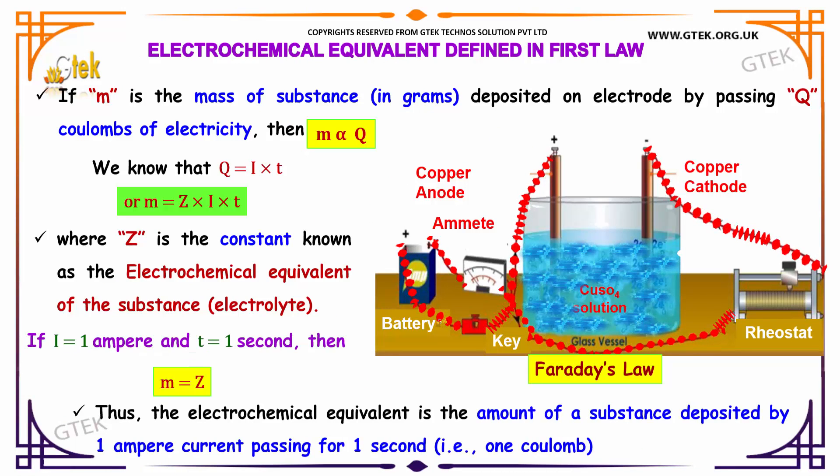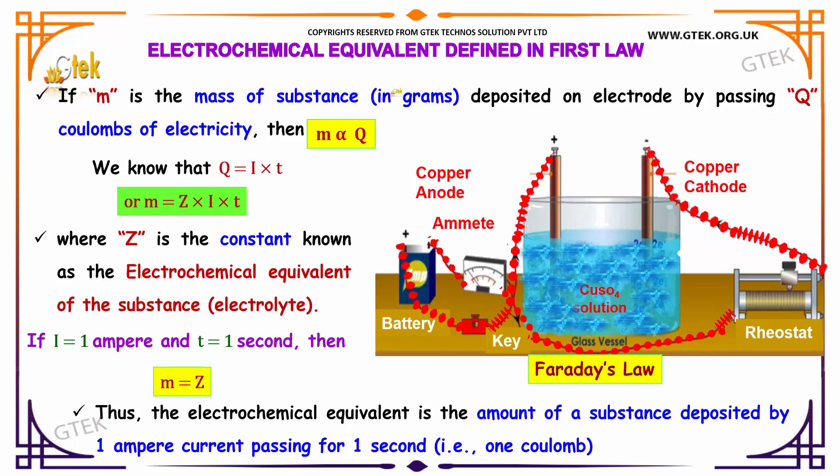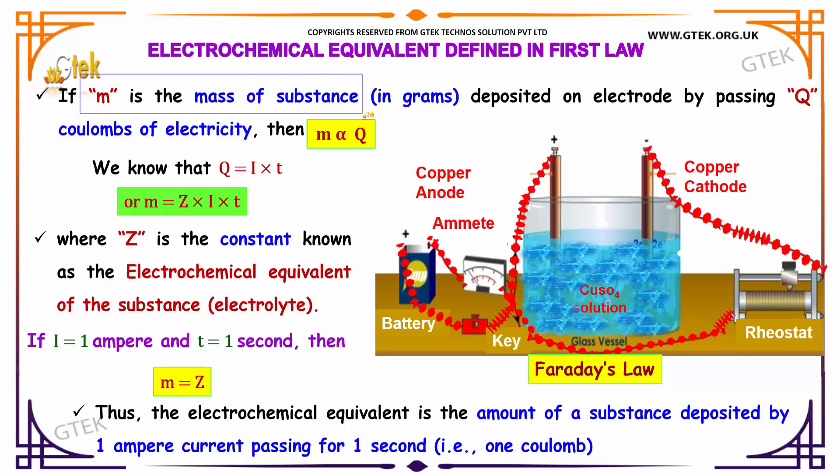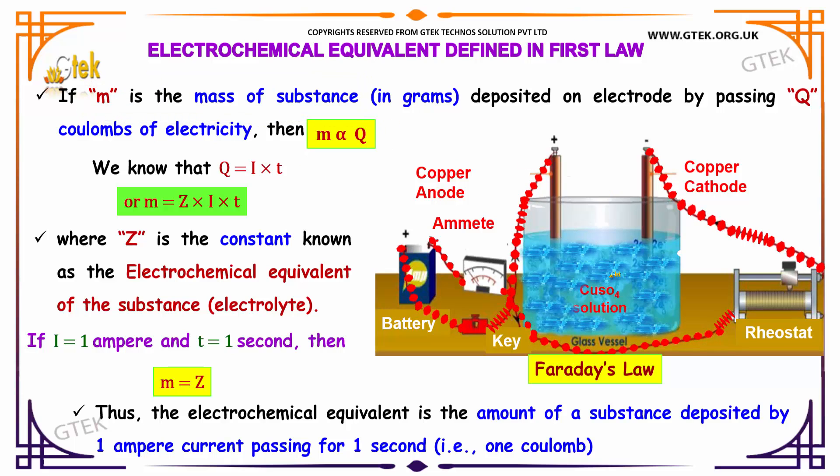Now let us discuss the topic called electrochemical equivalence defined in the first law. Considering if m is the mass of the substance in grams deposited on electrode by passing Q coulombs of electricity, then m is proportional to Q. We already knew that Q is equal to I times t.